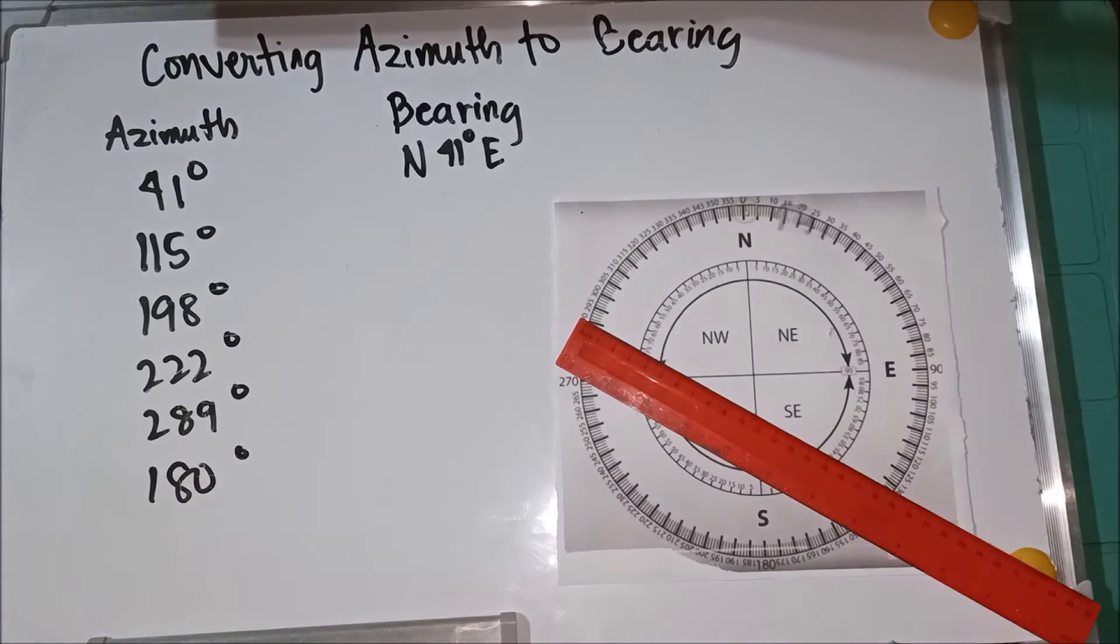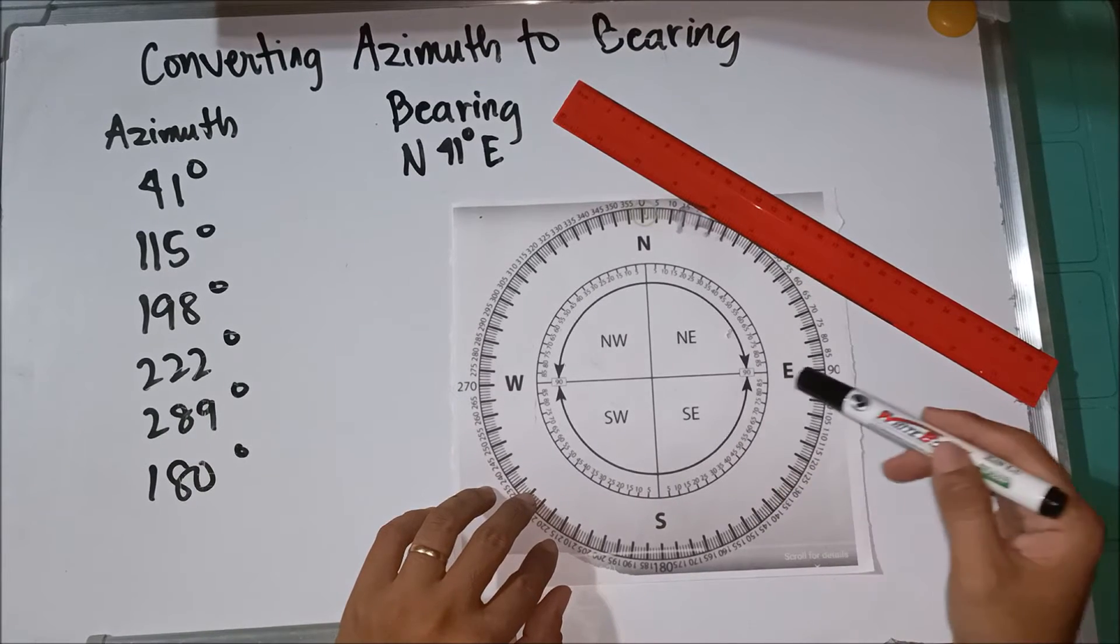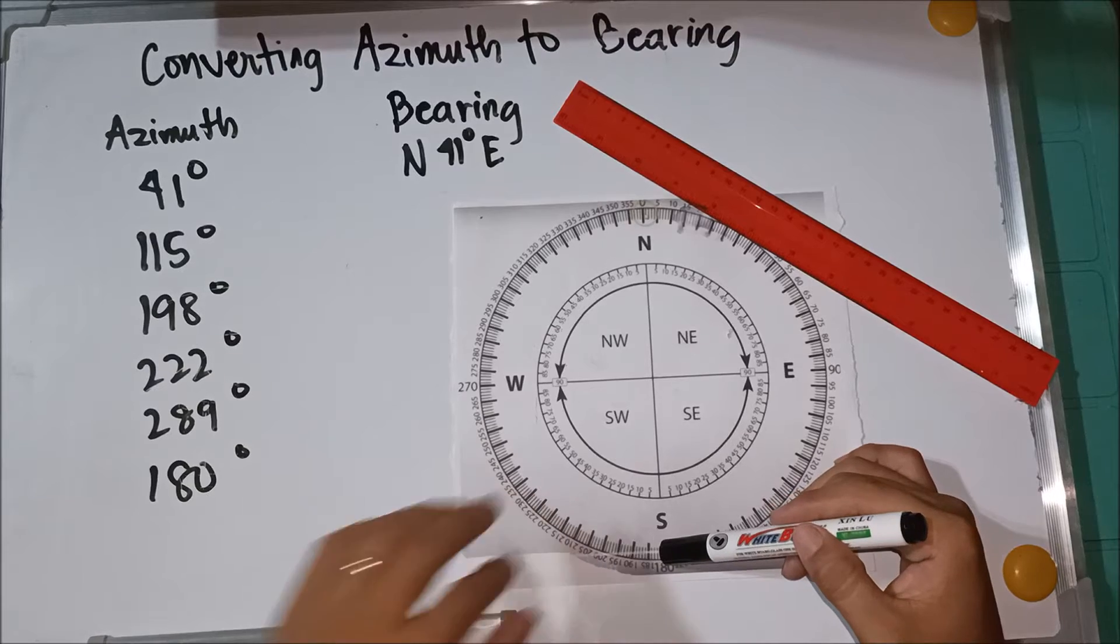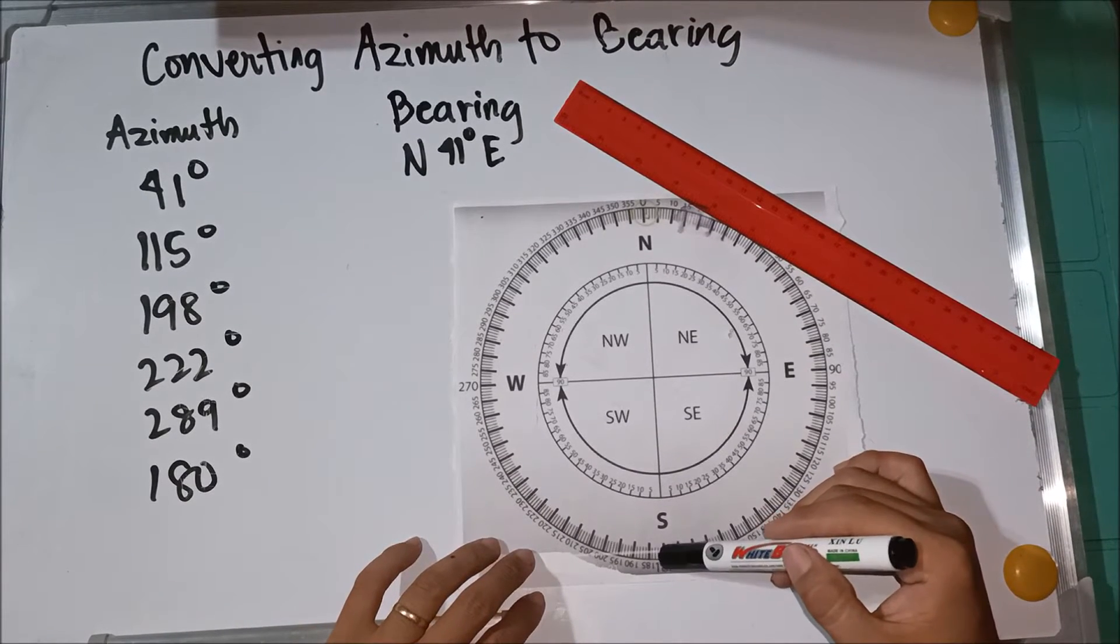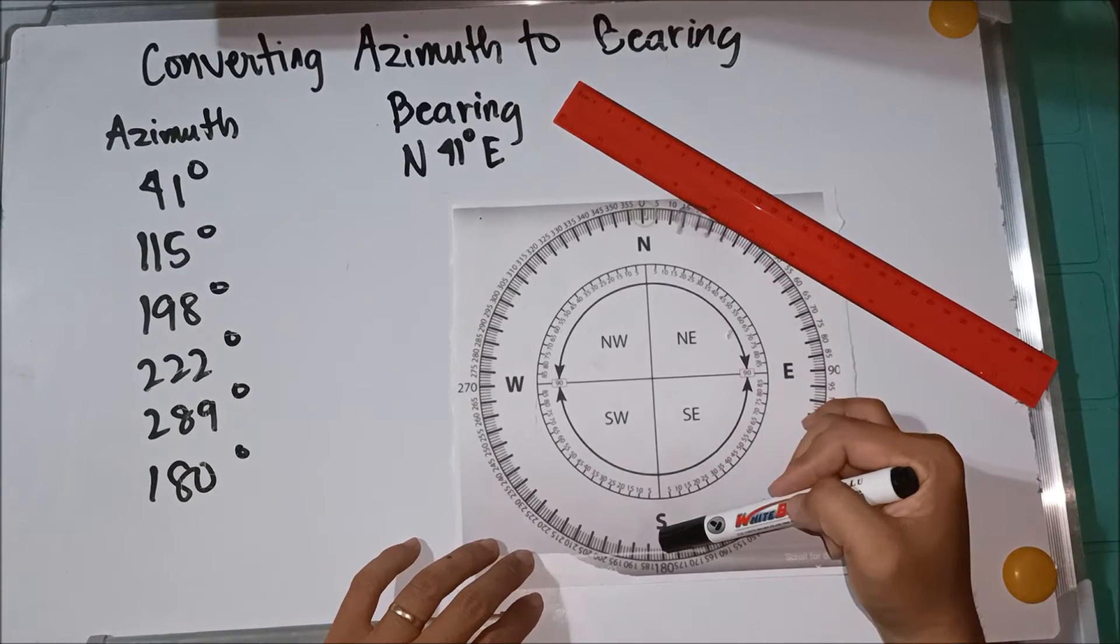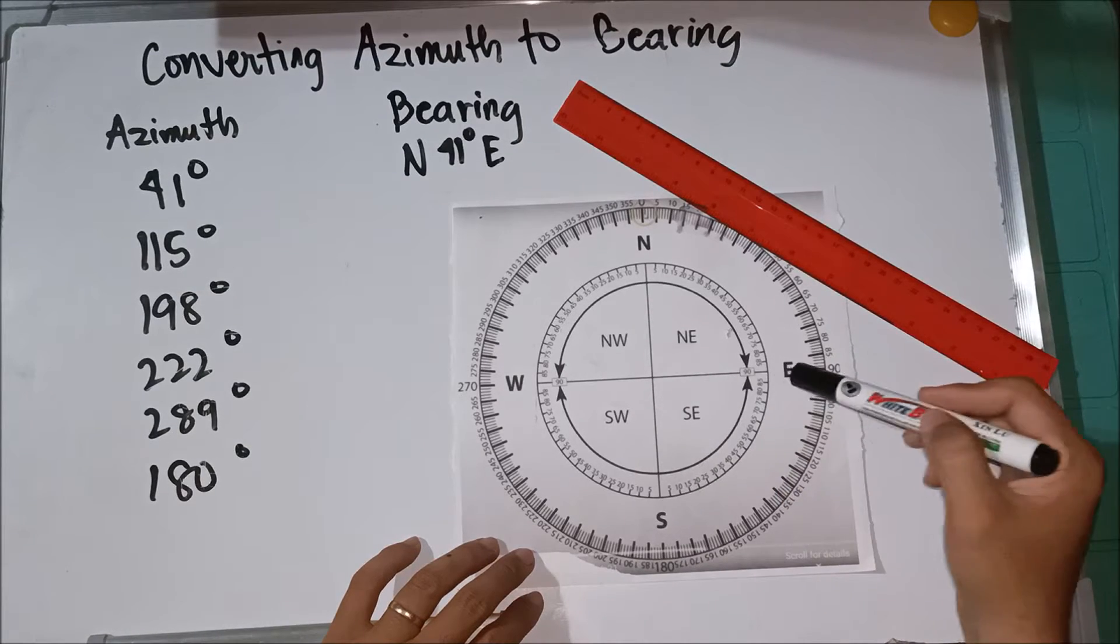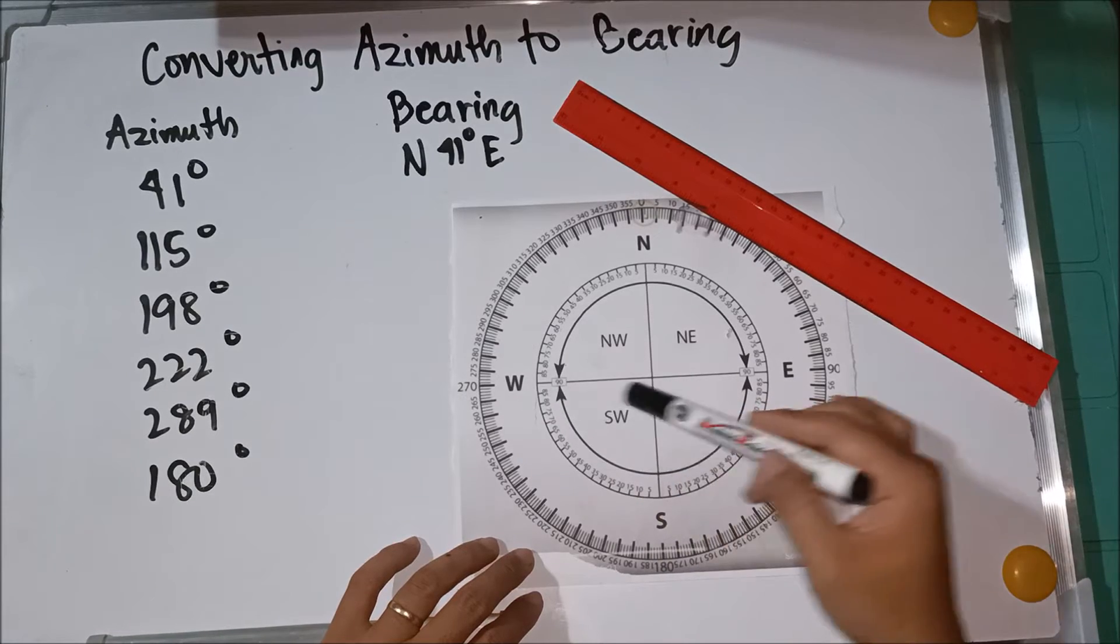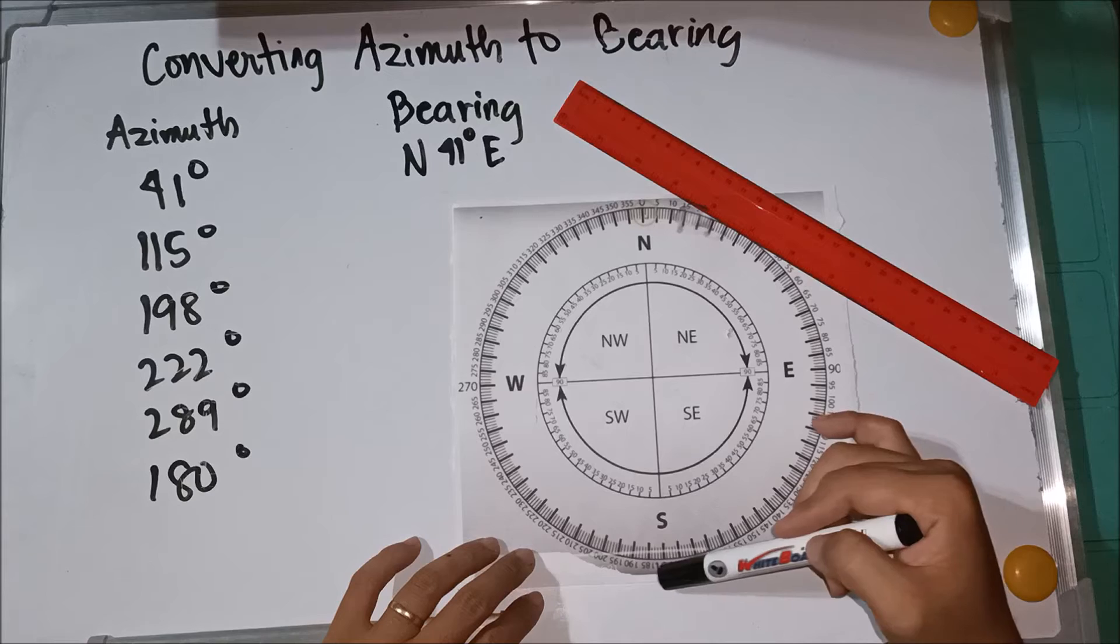So this gives directly the bearing. So the bearing for 115 is 65. So let's double check, let's calculate if it's 65. So to calculate, it falls in the quadrant southeast, and this is subtracted from 180. Based on 360 and 180, if the bearing is in the southeast, it's subtracted from 180, same with the southwest.